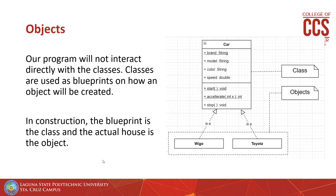Our program will not interact directly with the classes. Classes are used as blueprints on how an object will be created. Just like in construction, the blueprint contains the plan on how something is going to be built, and the actual house will be the object. Objects describe an is-a relationship with their class, so Wigo is a car and Toyota is a car.